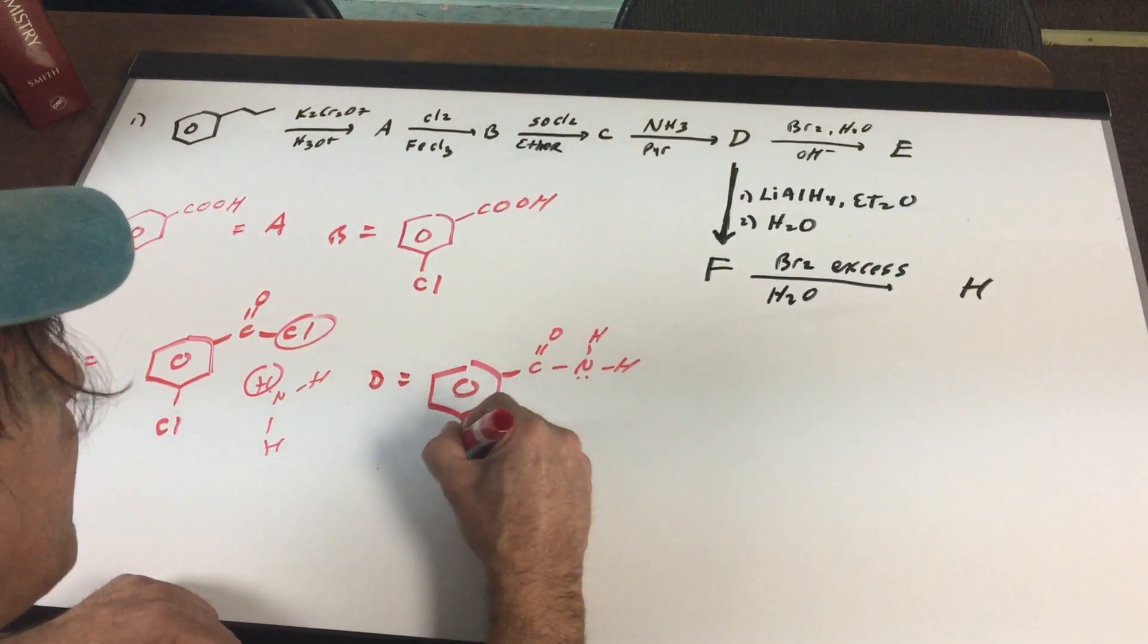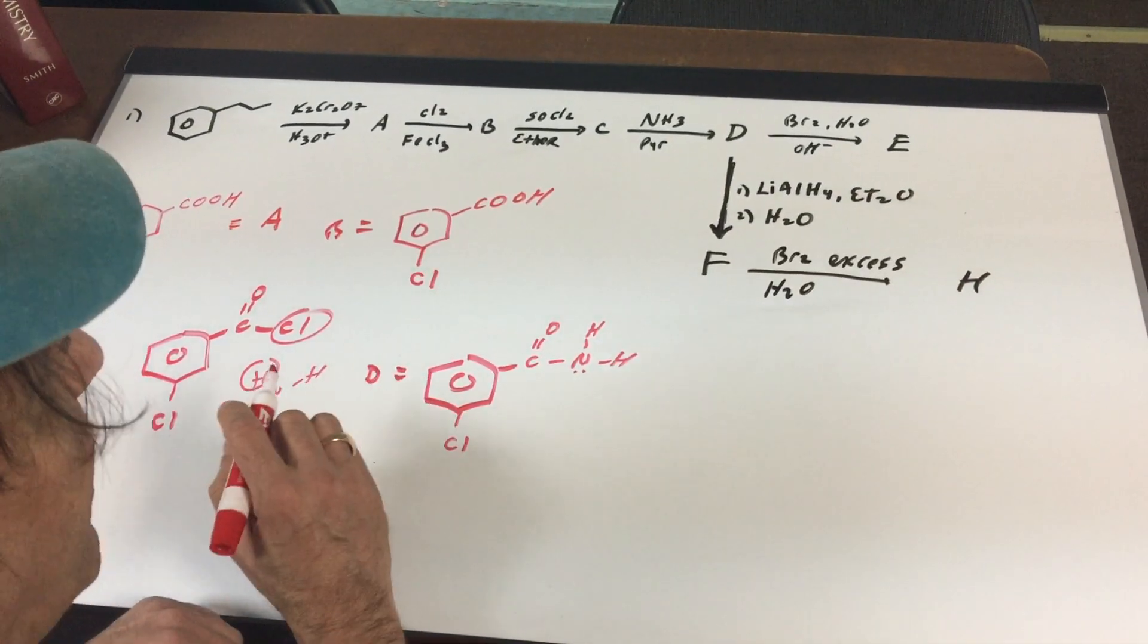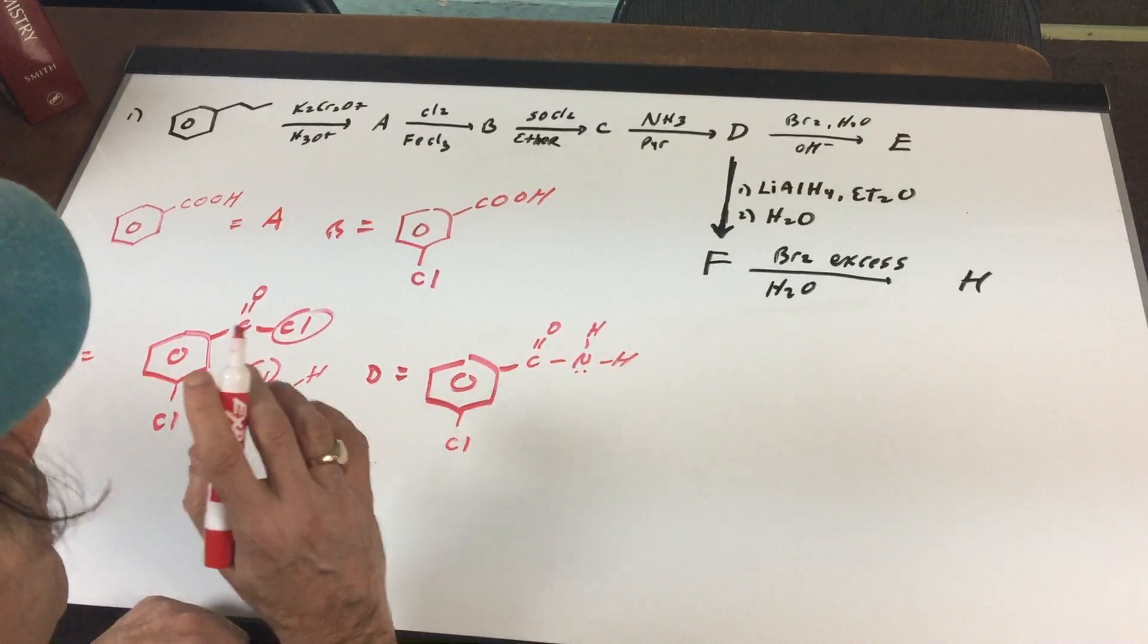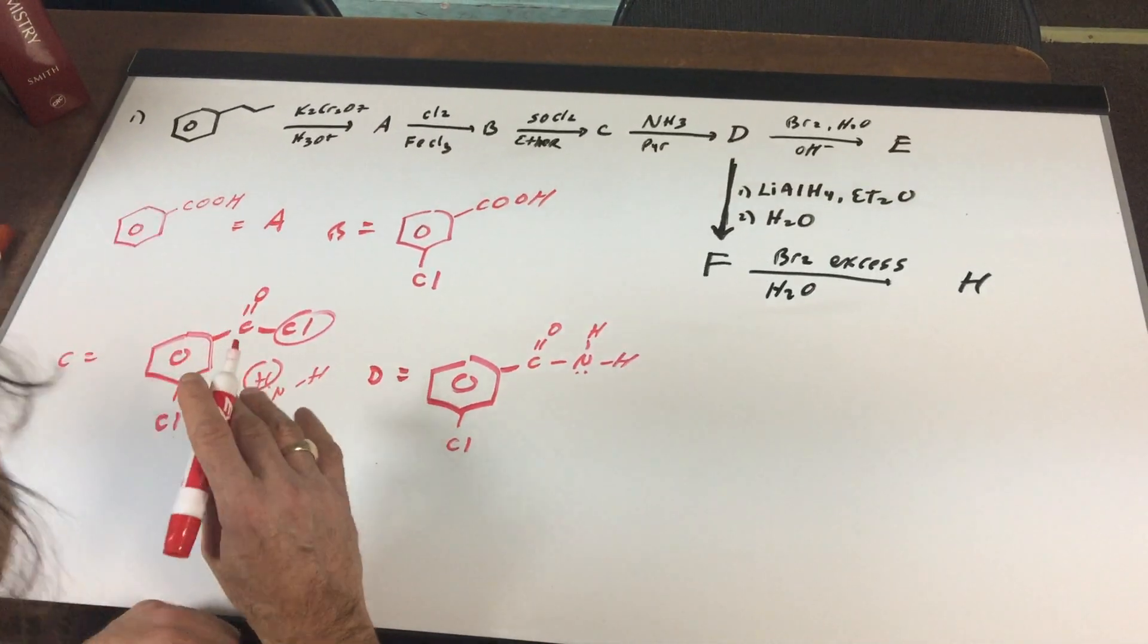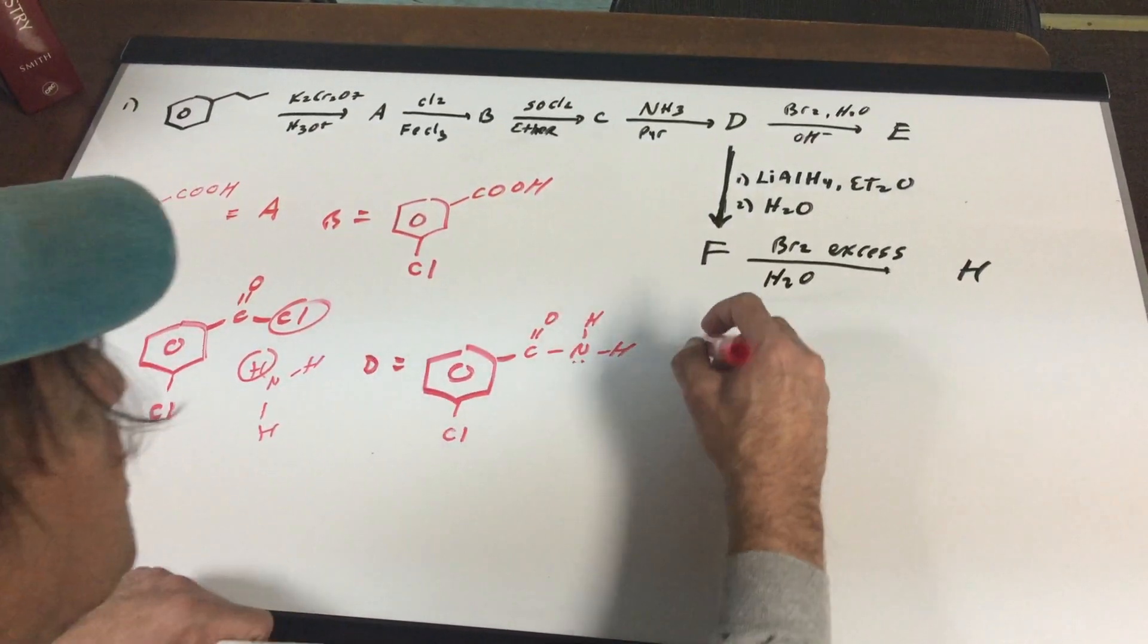The fun and games are now over. A, B, C, D was straightforward. The last three I think are a little bit tricky. Letter E, nine kids out of ten will get wrong. Does anyone know what D to E is?